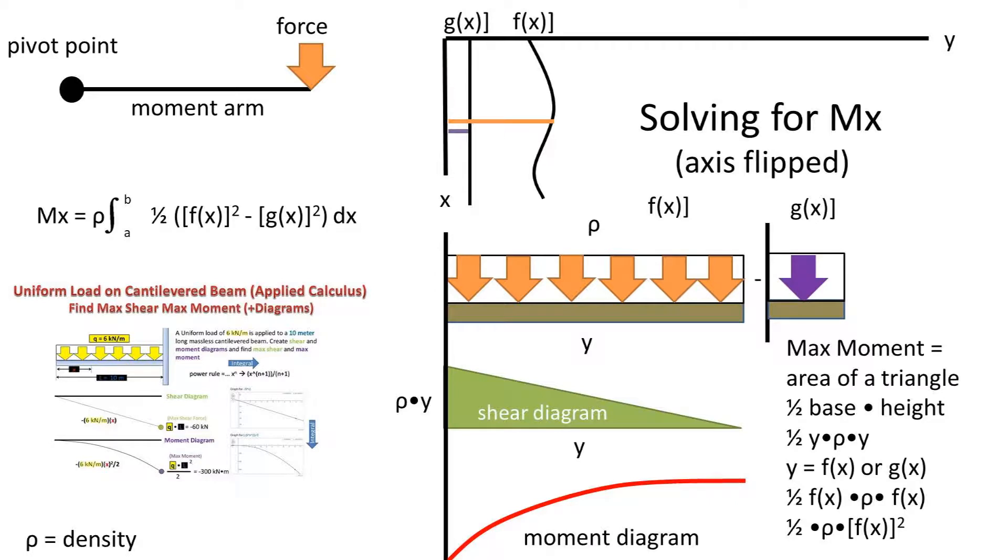Also recall that we can sum up moments. So if we have two functions f and g, we can find the moment of the area between these two functions by taking f(x) and subtracting g(x).